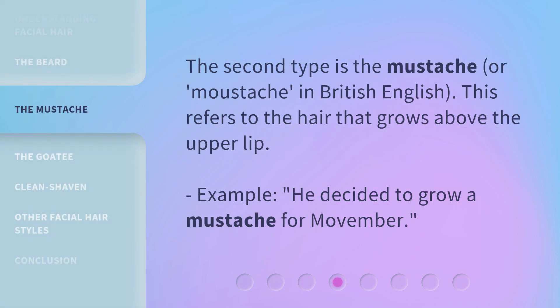The second type is the mustache, or mustache in British English. This refers to the hair that grows above the upper lip. Example: He decided to grow a mustache for Movember.